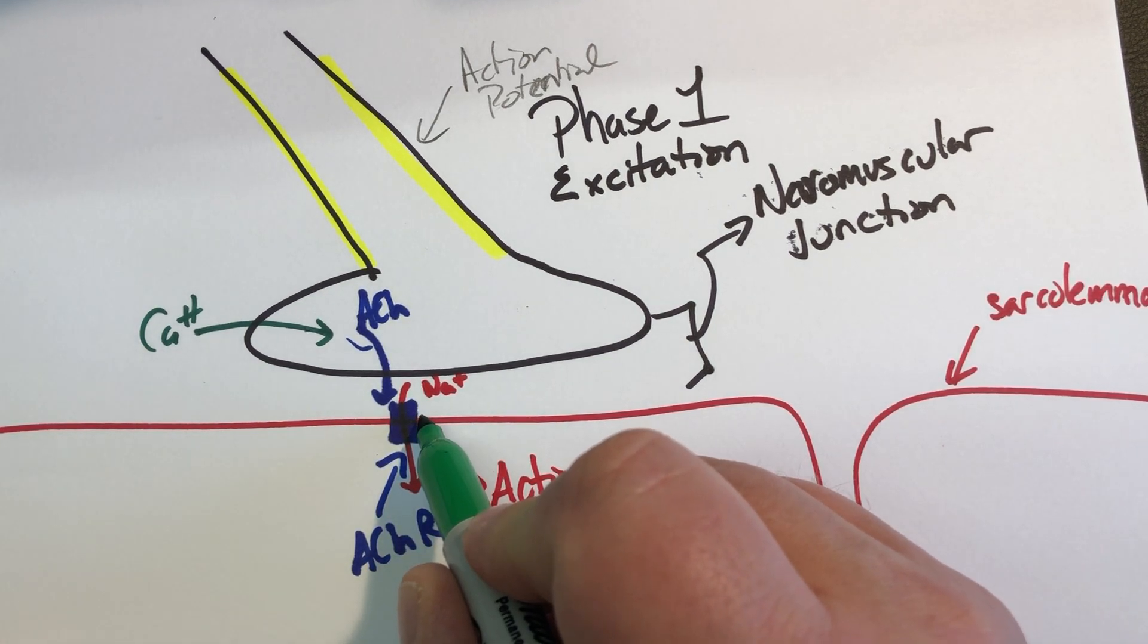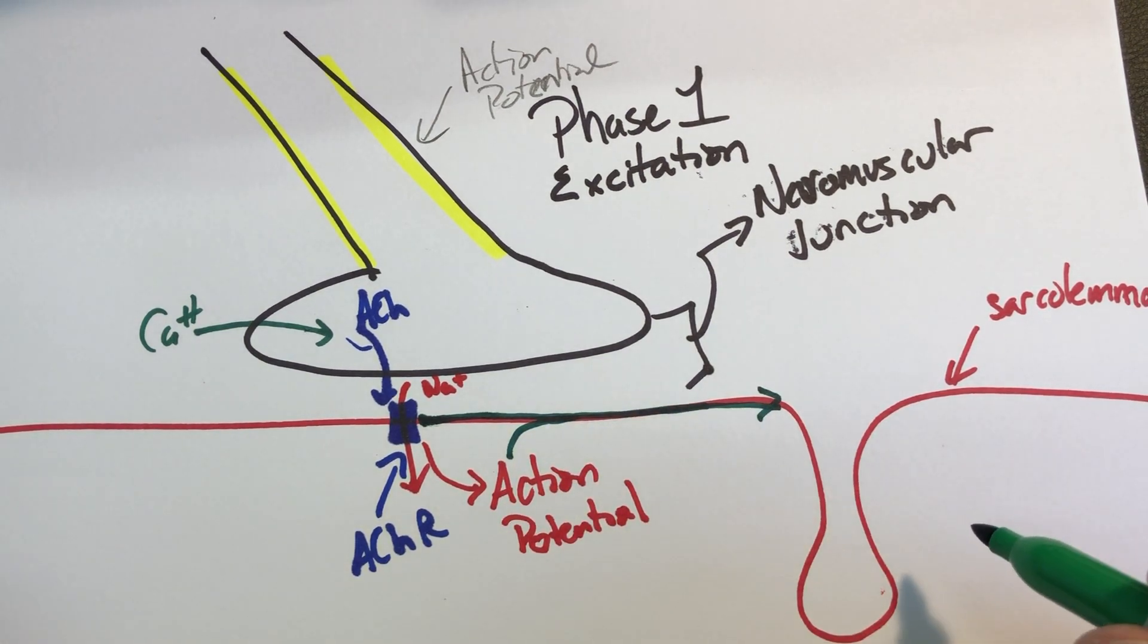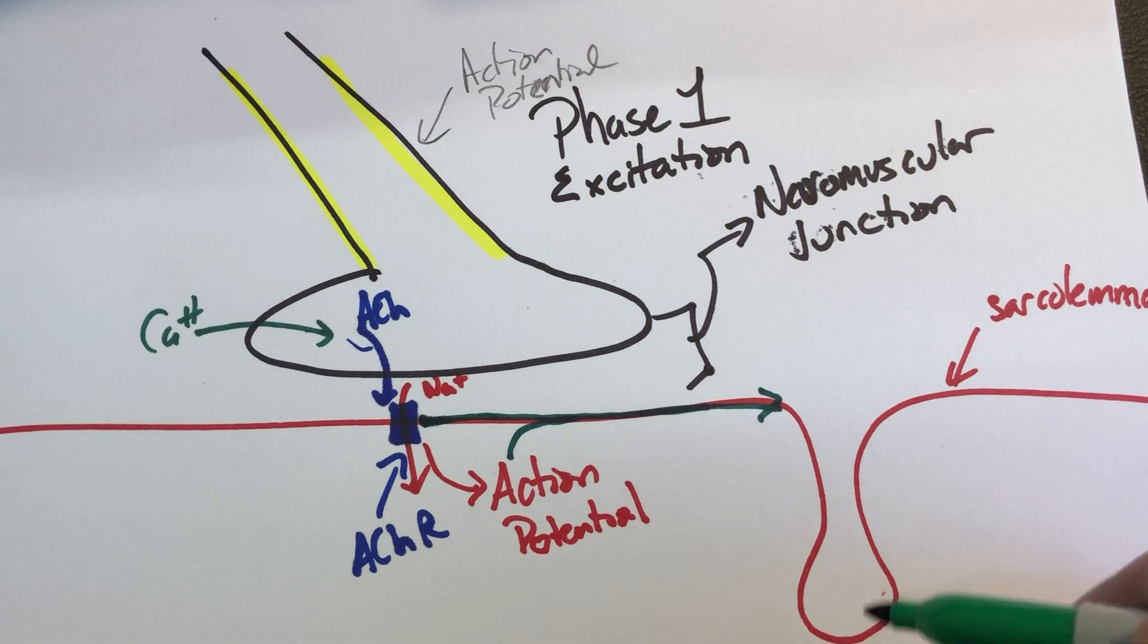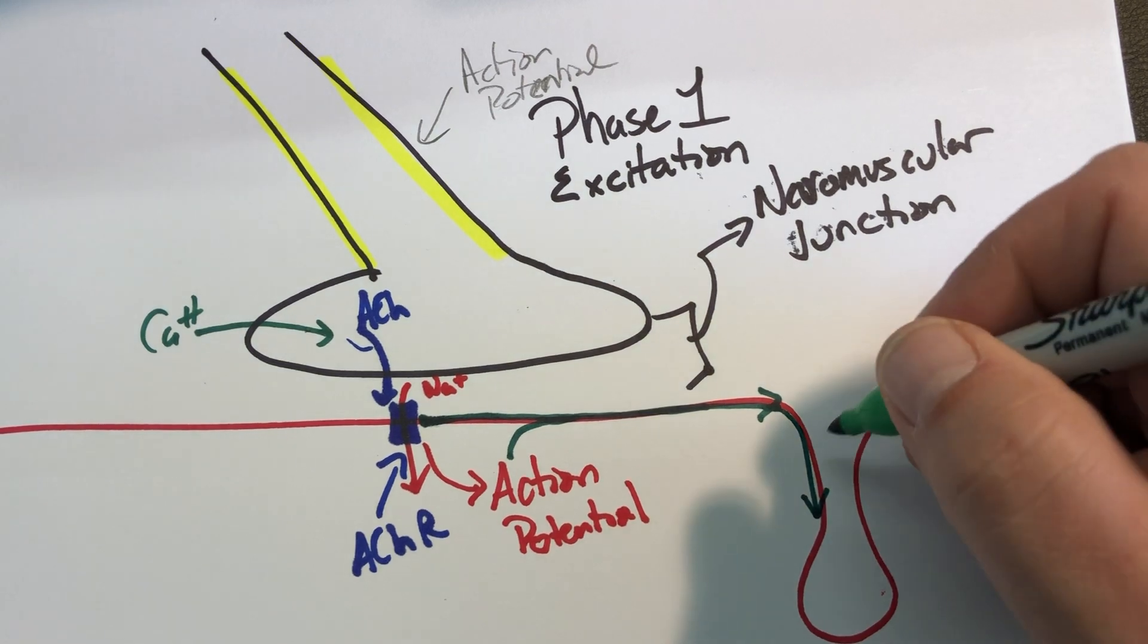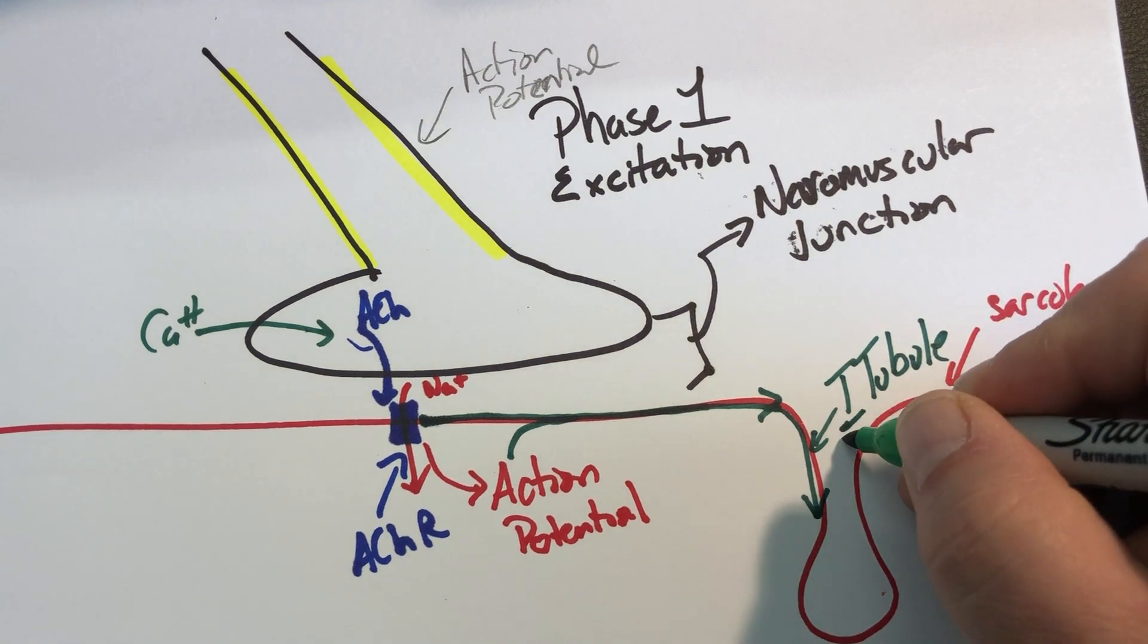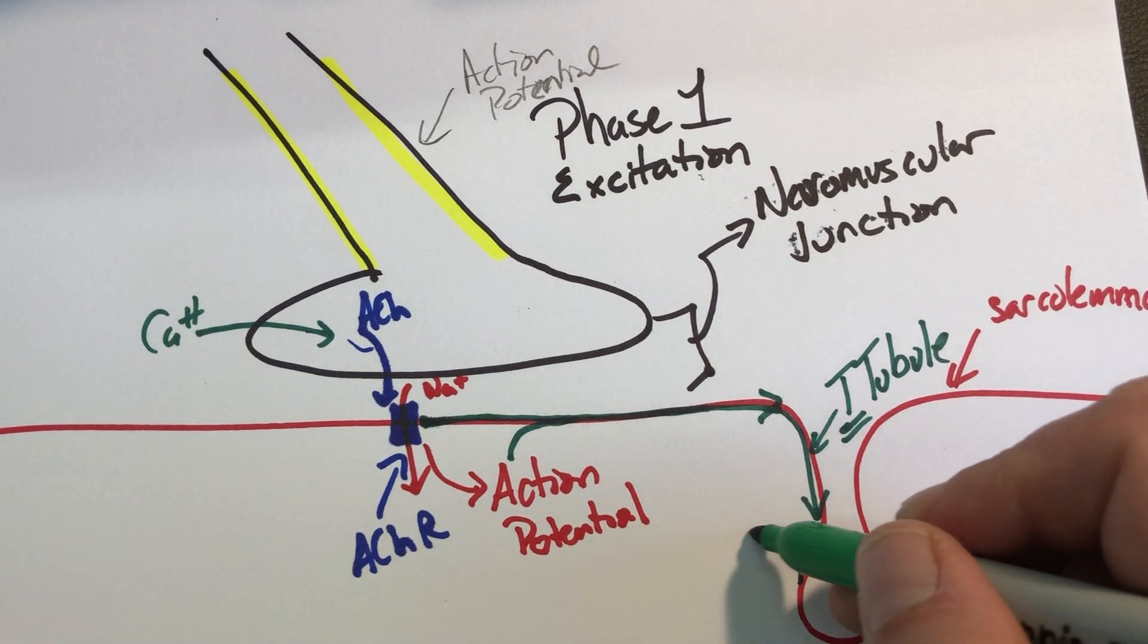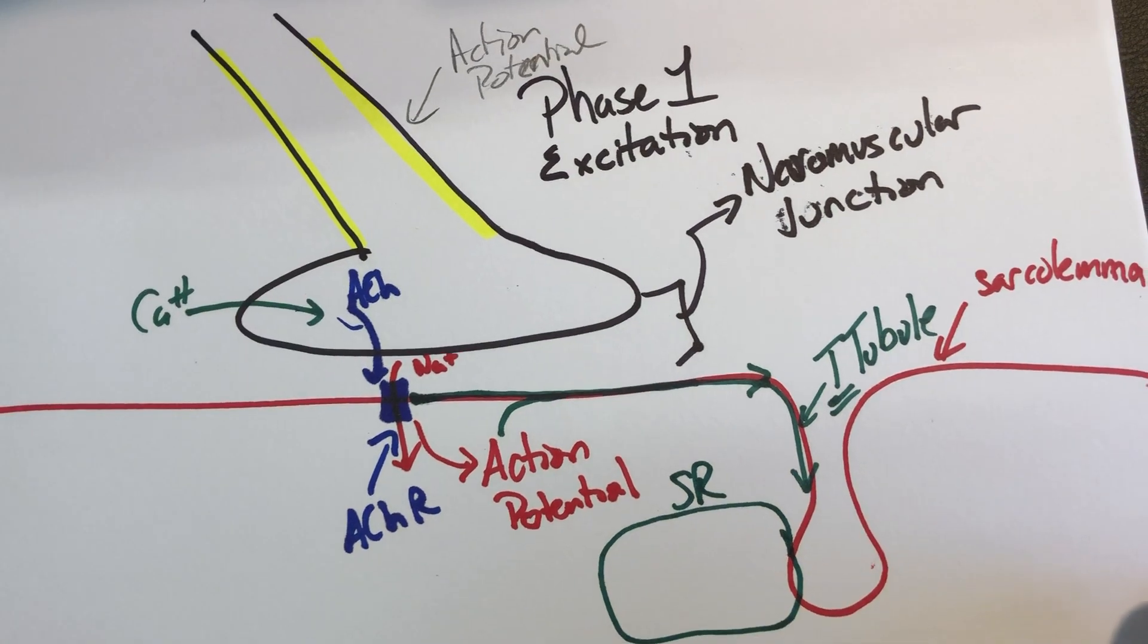And so this sarcolemma will transmit this action potential down the length of the sarcolemma. Now, the sarcolemma covers the length, but how do we get down into the width of that space? And so the first thing that we would encounter, and we would see this depolarizing wave hit, is the T-tubule. The T in T-tubule stands for transverse. Transverse carries it across. And we hit this space where the T-tubule kind of comes in contact with, I'm going to abbreviate it SR for sarcoplasmic reticulum.